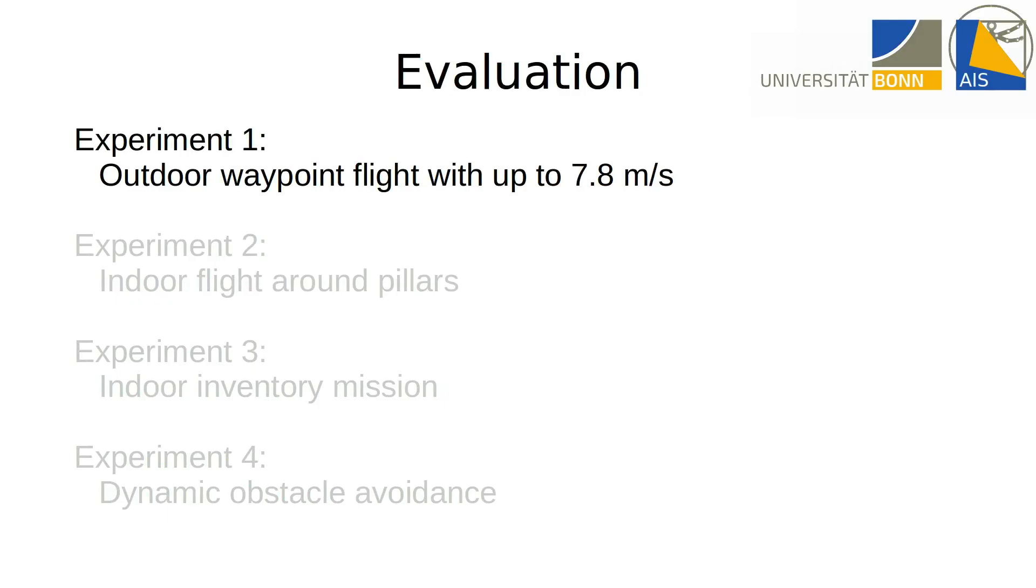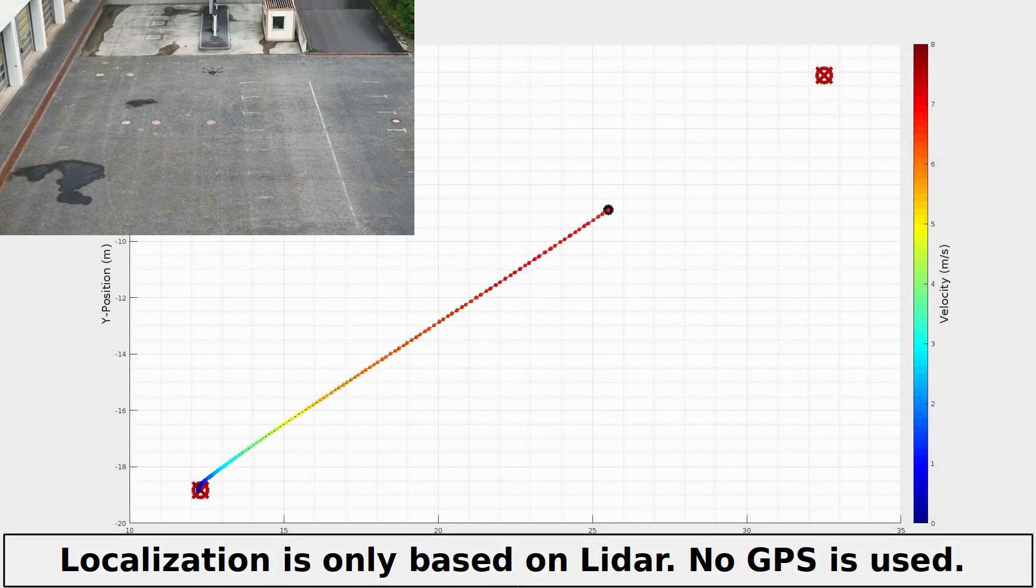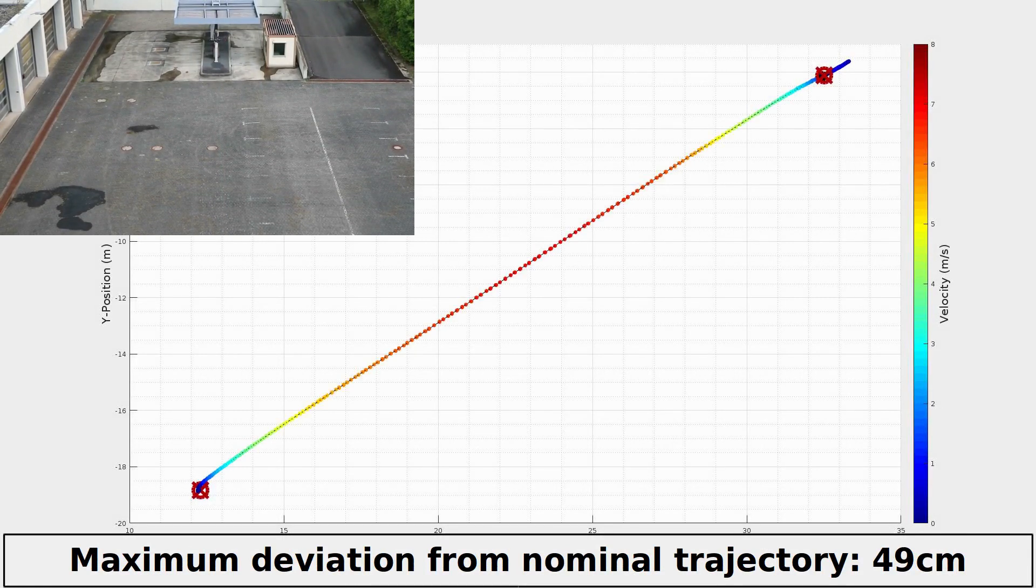We evaluate our system in four scenarios. In the first experiment, the MAV alternates between two waypoints. It reaches velocities of up to 7.8 meters per second, while only relying on the onboard 3D LADAR for localization.